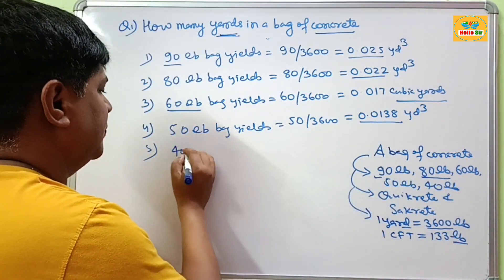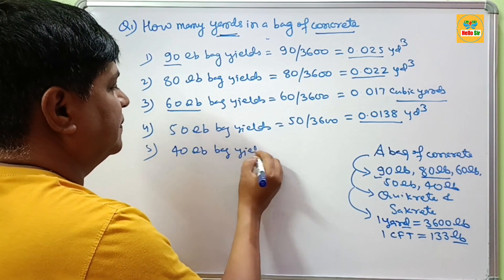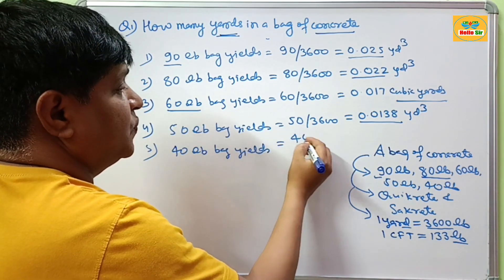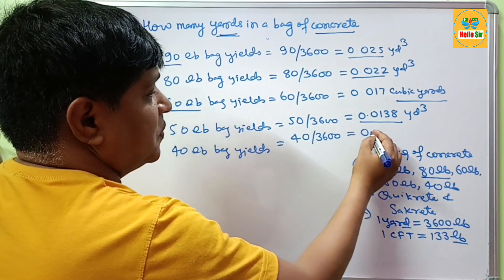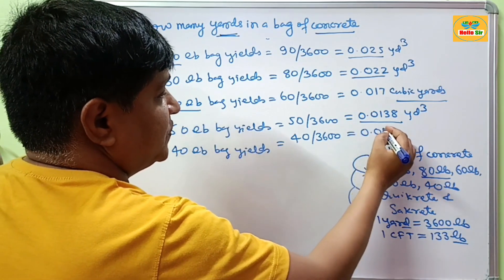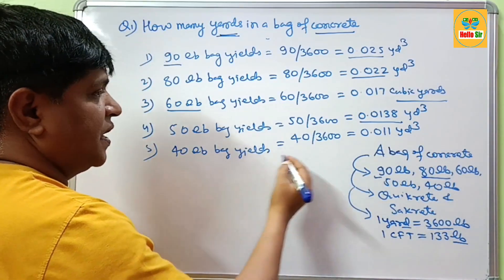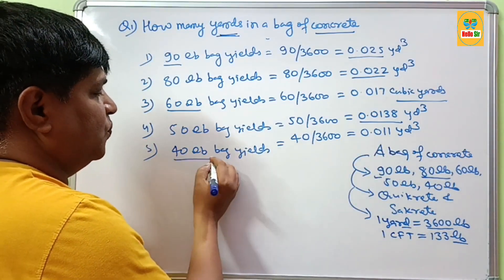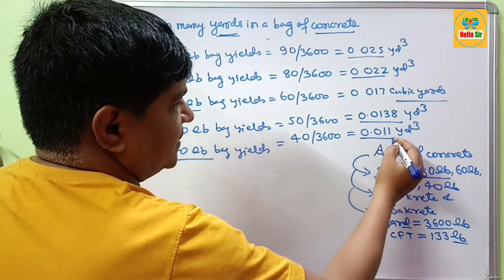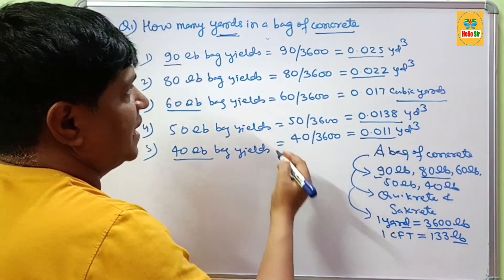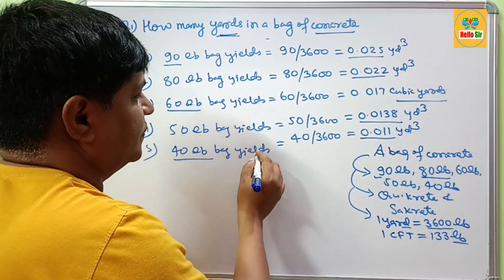For a 40 lb bag yields: 40 divided by 3600 comes out to about 0.011 cubic yards. The answer to how many cubic yards are in a 40 lb bag of concrete is 0.011 cubic yards.